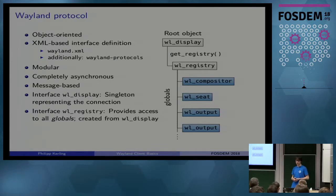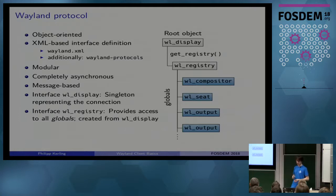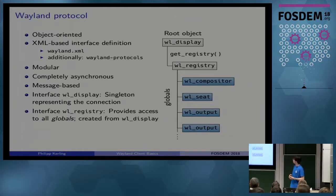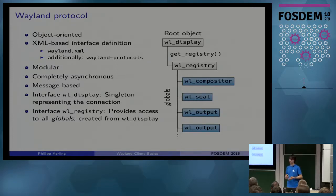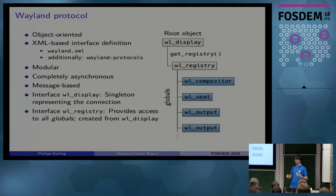The Wayland protocol is object-oriented, which means you create new objects via the protocol and then call methods on them — called requests — or you get events from the server. Every function call is associated with an object; there are no bare function calls. The protocol is defined in XML files; the main one is called wayland.xml, shipped with Wayland. There are additional protocols for specific use cases in another repository called wayland-protocols. From these XML files, the C code you use to interface with Wayland is generated.